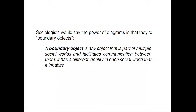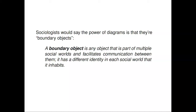Sociologists have a name for this concept — they call these diagrams boundary objects. A boundary object is any object that's part of multiple different social worlds and facilitates communication between them, with a different identity in each social world that it inhabits. The diagram means something different to the people in the village and the modeler, and also something different to me, the category theorist, but we can all communicate by pointing at the diagrams without having to agree on everything about what they mean.